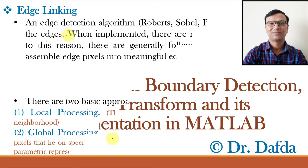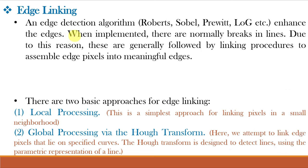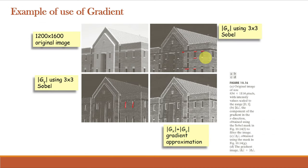In the previous video class we saw that the gradient operators like Robert, Sobel, Previtt, Laplacian of Gaussian etc. enhance the edges, but when we implement these filters practically there are usually breaks in lines. Due to this reason these are generally followed by linking procedures to assemble edge pixels into meaningful edges. In the figure from the previous class, horizontal and vertical lines are detected, but after detecting both there may be breaks in between the lines.